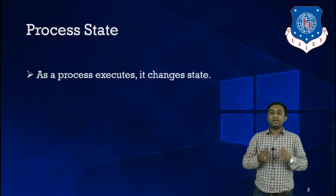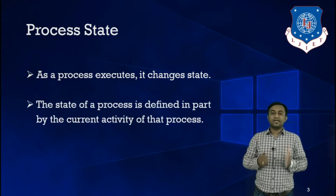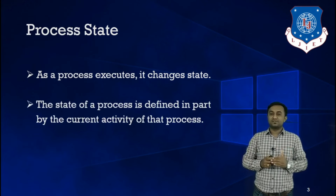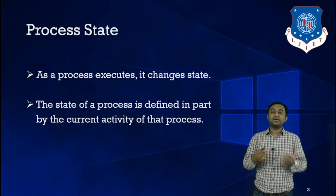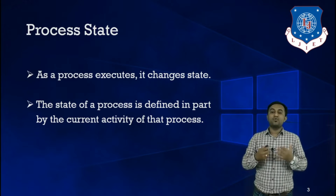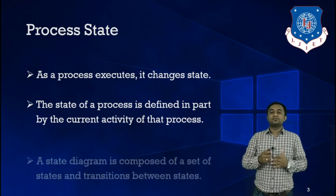What is Process State? As a process executes, it changes its state. The state of a process is defined by the current activity of that process. For example, if a process is doing some I/O operation, according to that we can figure out which particular state that process is in.